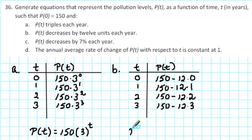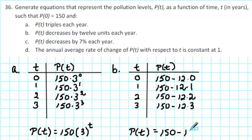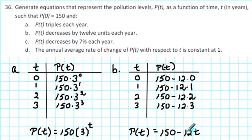So our equation is p of t equals 150 minus 12 times t. Notice that this time we have a linear function. The initial pollution level is 150, and the average rate of change is negative 12 units per year, meaning that the pollution level goes down by 12 units per year.